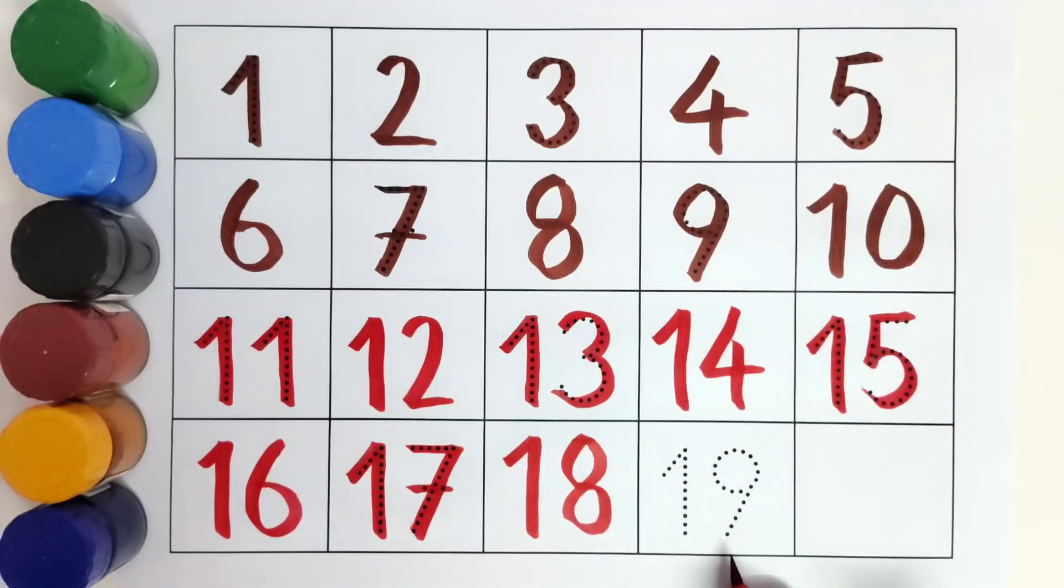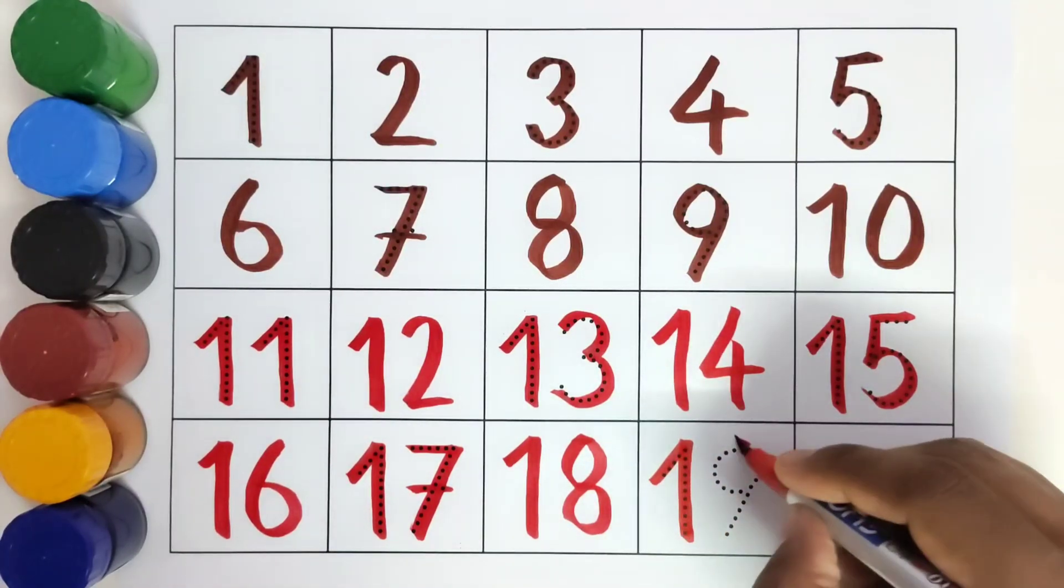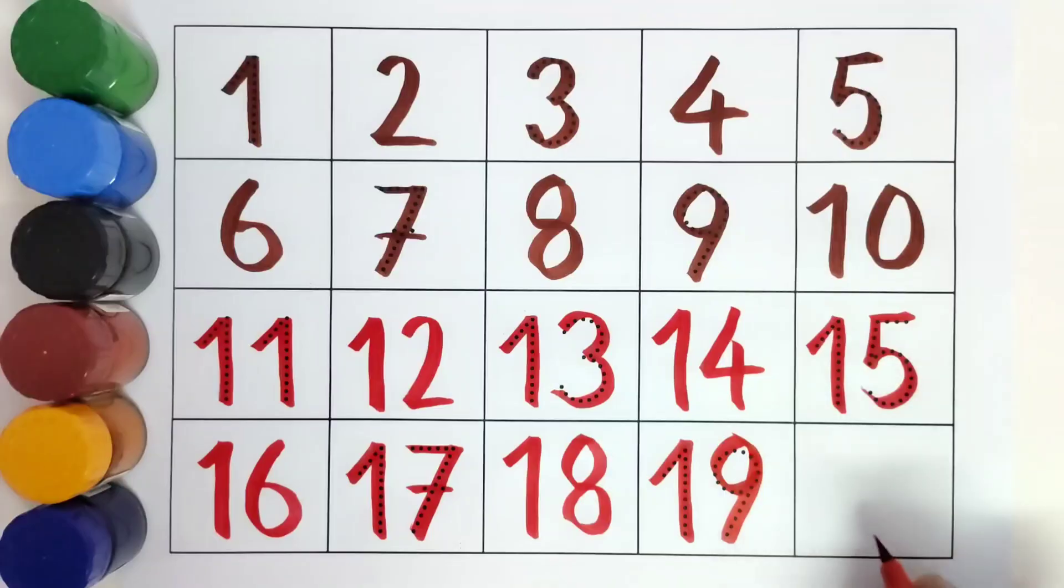This is? Nineteen. What comes after nineteen? Twenty. Twenty.